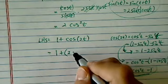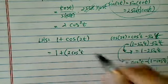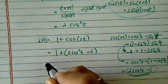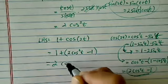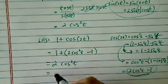So, let's put this one in there. It's twice cosine squared t minus 1. Obviously, this is equal to twice cosine squared t, which is equal to right-hand side. That completes the proof.